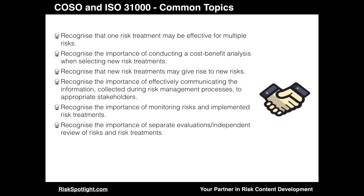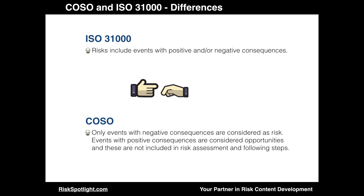Now let's look at the differences between them. These are important to understand because this is where you will have to make a decision on whether to align with COSO ERM concepts or ISO 31000 concepts. The first key difference is that ISO considers events with positive and/or negative consequences as risks, so far as there are uncertainties associated with such events. However, COSO only considers events with negative consequences as risks. It covers guidance to identify events with negative and positive consequences during the risk identification stage, but only events with negative consequences are taken to subsequent processes such as risk assessment. Events with positive consequences are considered as opportunities and recommended to be shared with appropriate stakeholders.